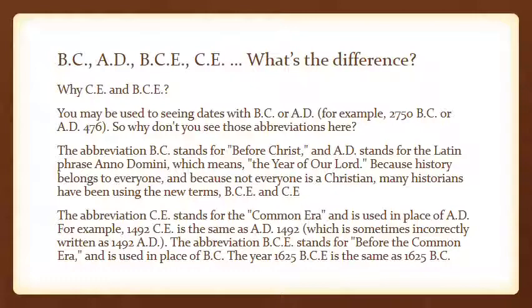So why don't we use these abbreviations as much anymore? BC stands for before Christ and AD stands for the Latin phrase Anno Domini, which means the year of our Lord. Because history belongs to everybody and not everybody is a Christian, many historians have been using BCE and CE as a more politically correct way to address time descriptions. CE stands for Common Era and is used in place of AD, so 1492 CE is the same as AD 1492.